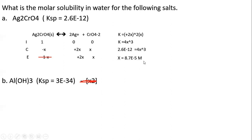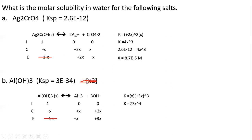For aluminum hydroxide, we set up the dissociation equation, get the Ksp expression just as before, plug in K, and solve for x. Since the Ksp here is smaller, the molar solubility is less than that of silver chromate. This is the molar solubility in water. Next time we'll look at molar solubility when a common ion is present.